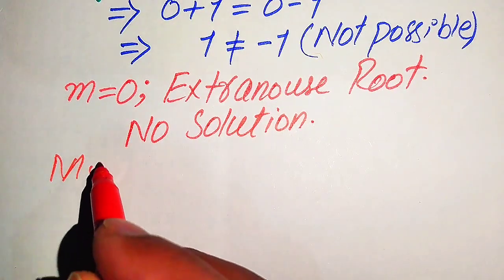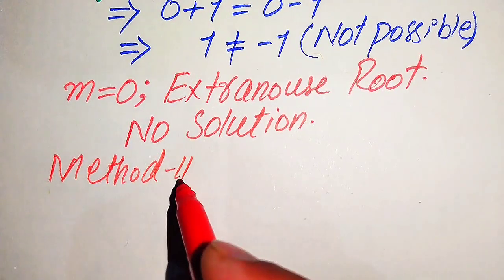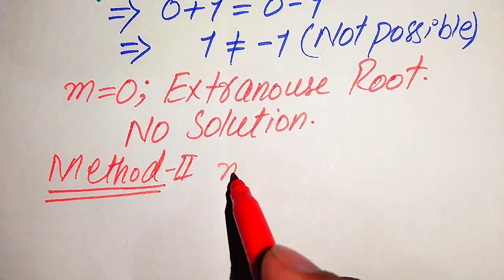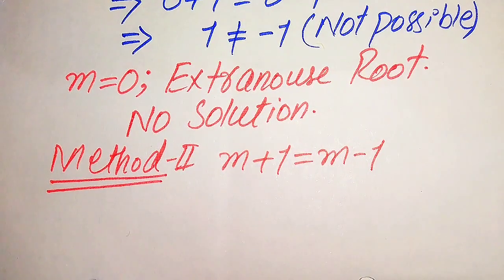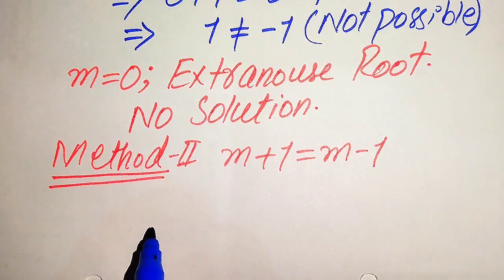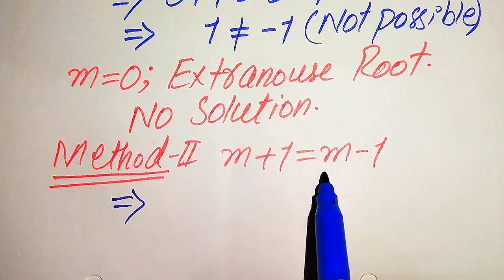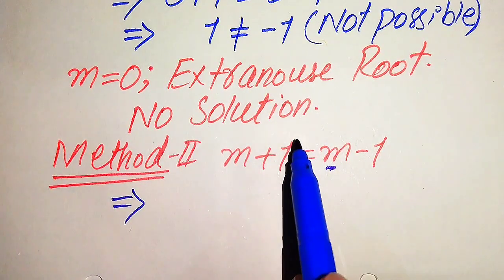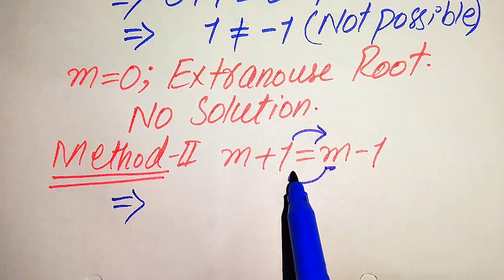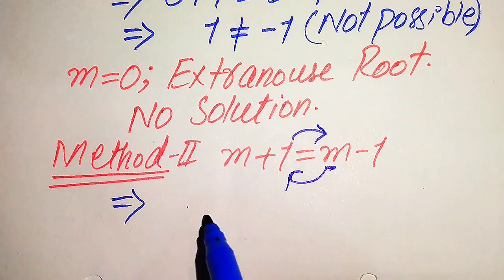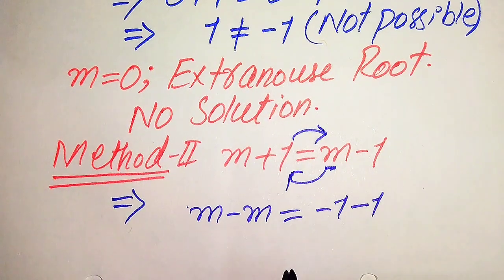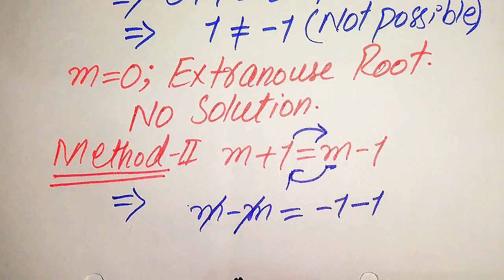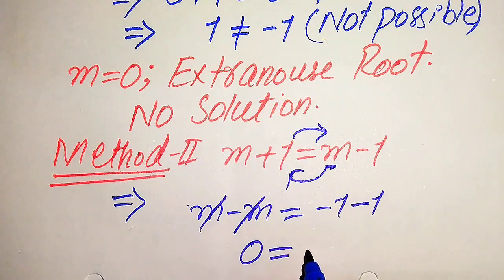Now we solve this problem using the second method, which is the quick method. We copy down the given equation: √(m+1) = √(m-1). We move m from the right-hand side to the left-hand side and move 1 to the right-hand side. This gives m − m = −1 − 1, and +m and −m cancel, giving us 0 = −2.